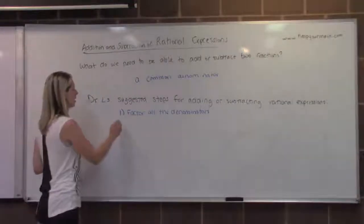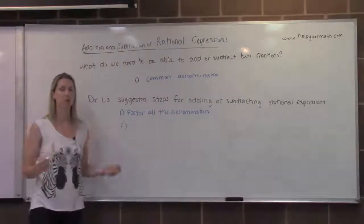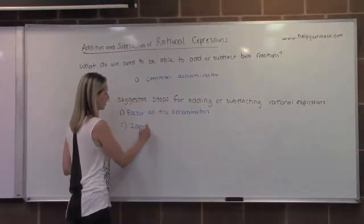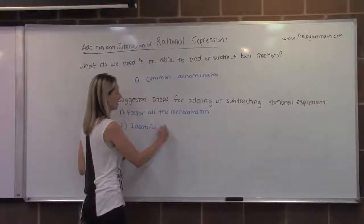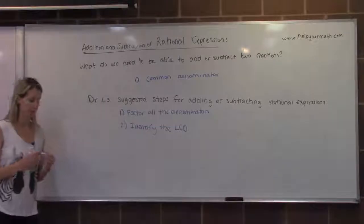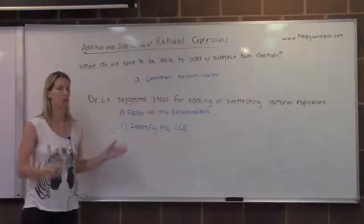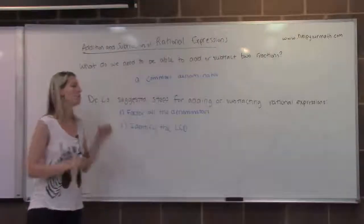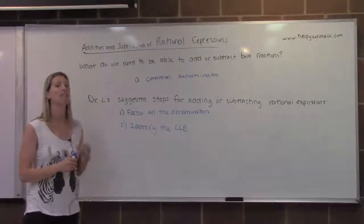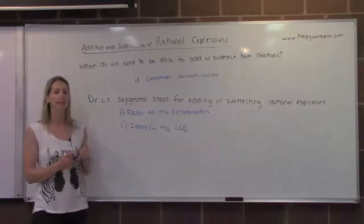Once the denominators are all factored, now we want to identify the least common denominator. And least common denominator, I'm going to call it LCD. LCD is least common denominator. We don't want to just find a common denominator. If it was just numbers, I would say whatever, you can just use whatever. But with these rational expressions, it will get very complicated. You want to specifically find the least common denominator. You don't want extra factors down there. I promise you don't. So you want to identify the least common denominator.